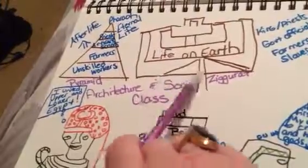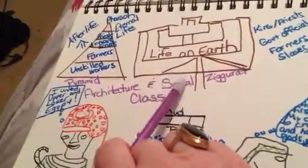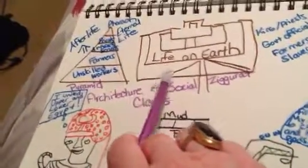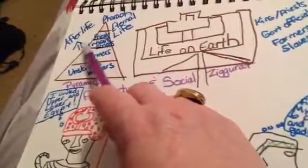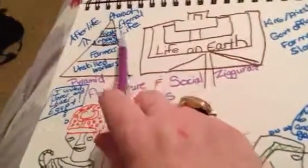Mesopotamia, they built their ziggurats, religious. They seemed more concerned with life on Earth. Egypt was more concerned with the afterlife and having eternal life.